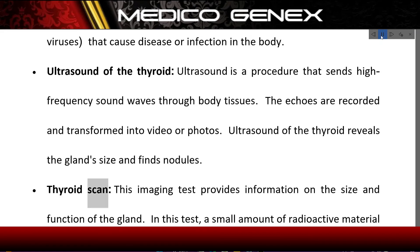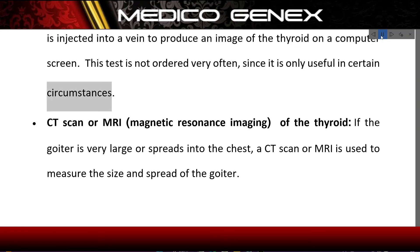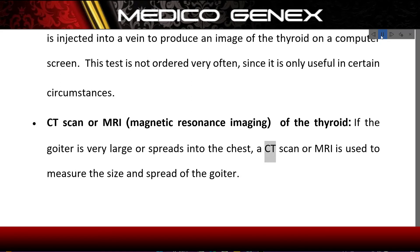Thyroid scan: This imaging test provides information on the size and function of the gland. A small amount of radioactive material is injected into a vein to produce an image of the thyroid on a computer screen. This test is not ordered very often, since it is only useful in certain circumstances. CT scan or MRI of the thyroid: If the goiter is very large or spreads into the chest, a CT scan or MRI is used to measure the size and spread of the goiter.